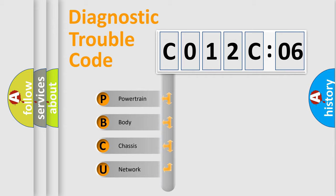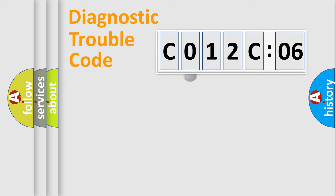We divide the electric system of the automobile into four basic units: Powertrain, Body, Chassis, and Network.